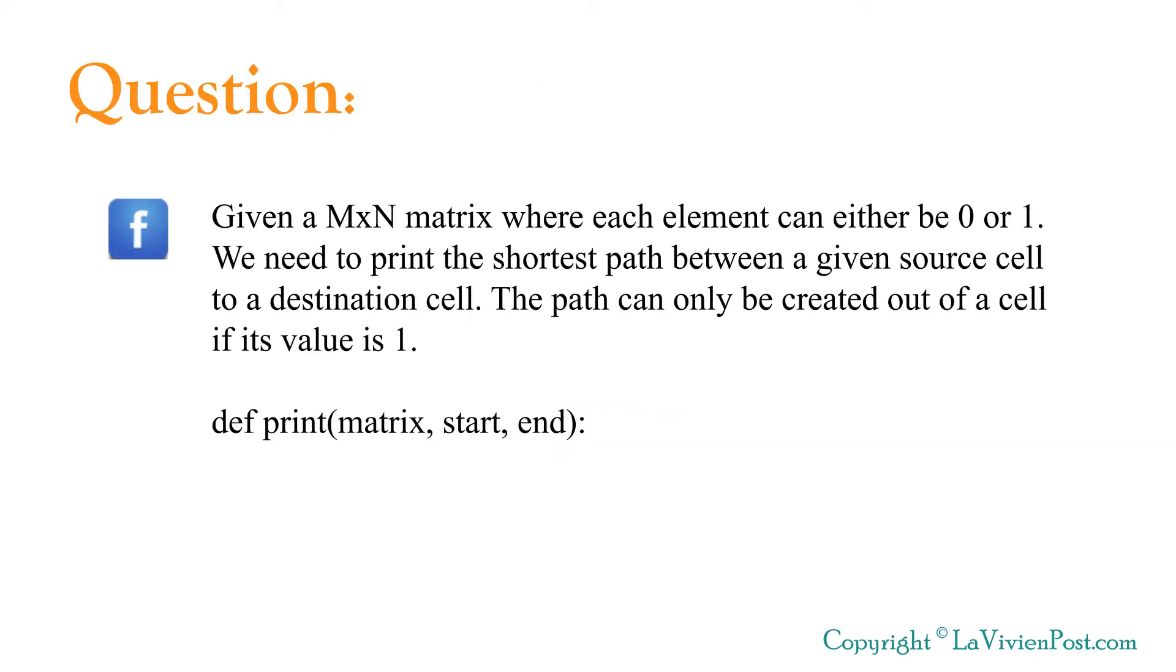This is a question statement. Given an m x n matrix where each element can either be 0 or 1, we need to print the shortest path between a given source cell to a destination cell. The path can only be created out of a cell if its value is 1.